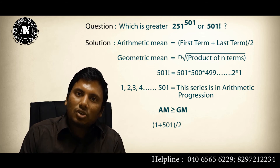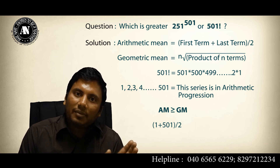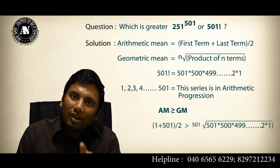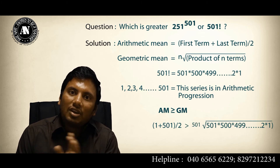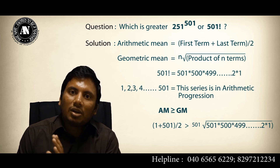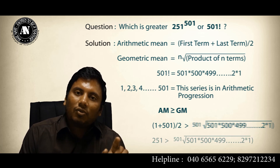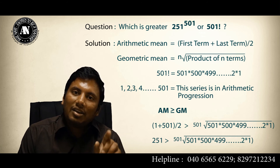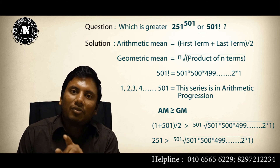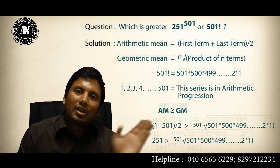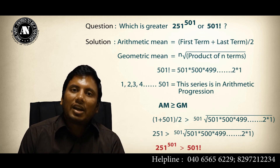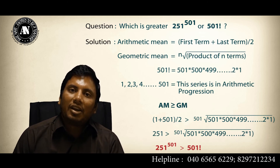For the terms 1, 2, 3, ... up to 501, the arithmetic mean (1 + 501) / 2 is greater than the 501st root of (1 × 2 × 3 × ... × 501). That gives us 251 > 501st root of 501!. Raising both sides to the power of 501, we get 251^501 > 501 factorial.